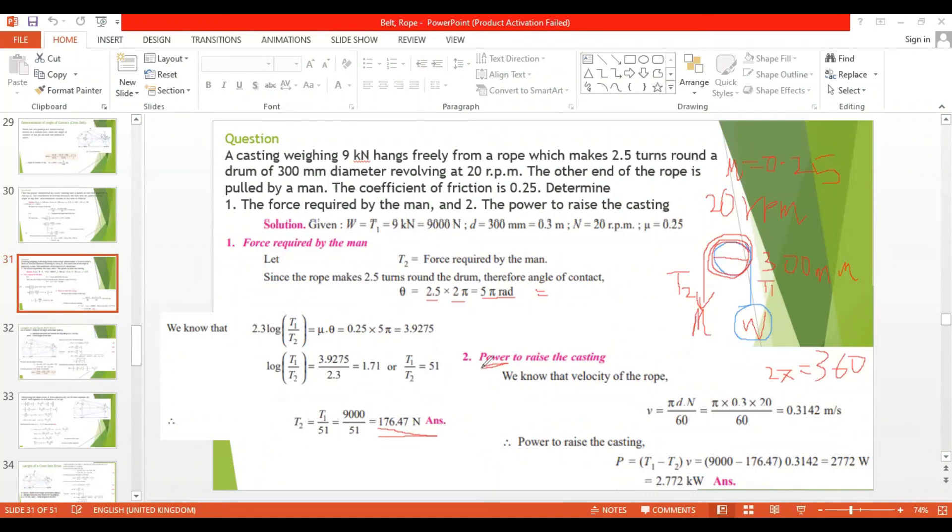Now we need to find v. We have the equation pi dn by 60. Pi d - it's given 300 millimeter, that is 0.3 meter, n is 20 rpm, by 60. When you solve this, you will have 0.3142 meter per second.